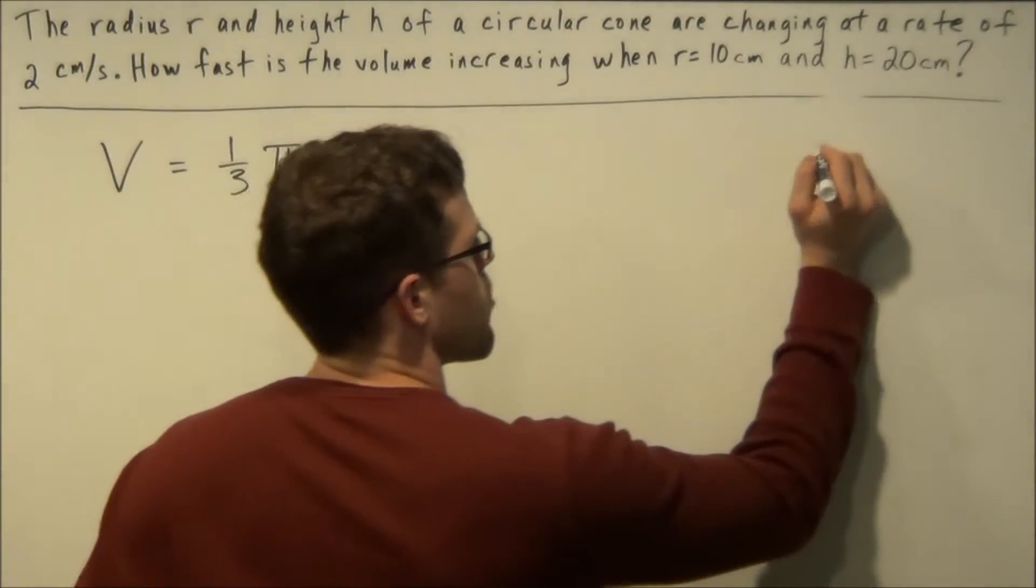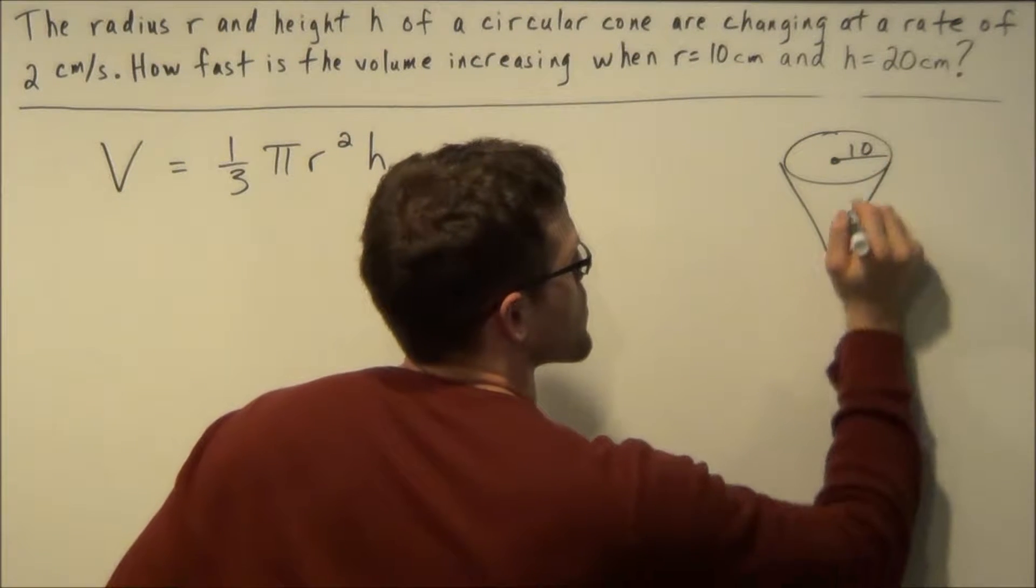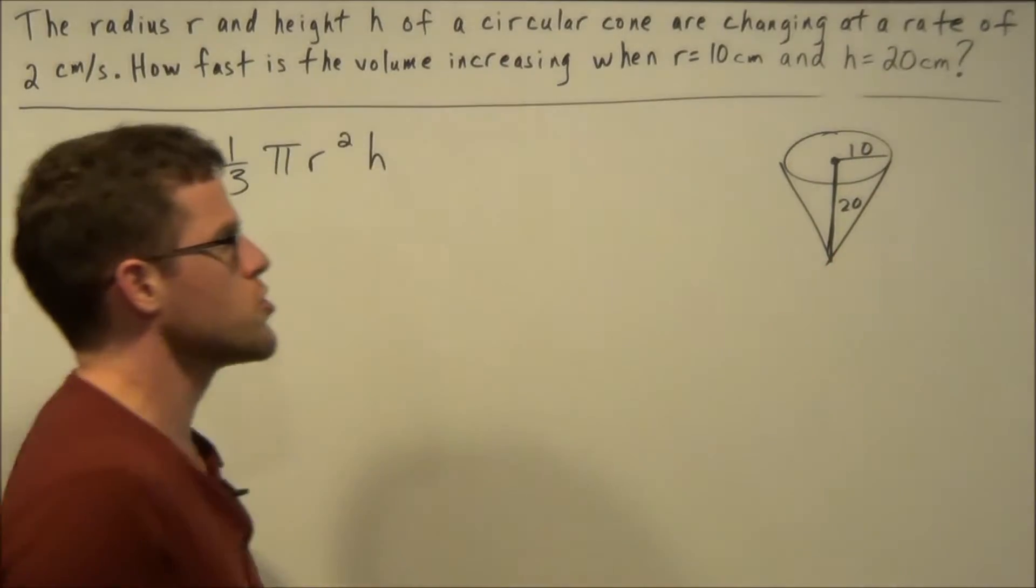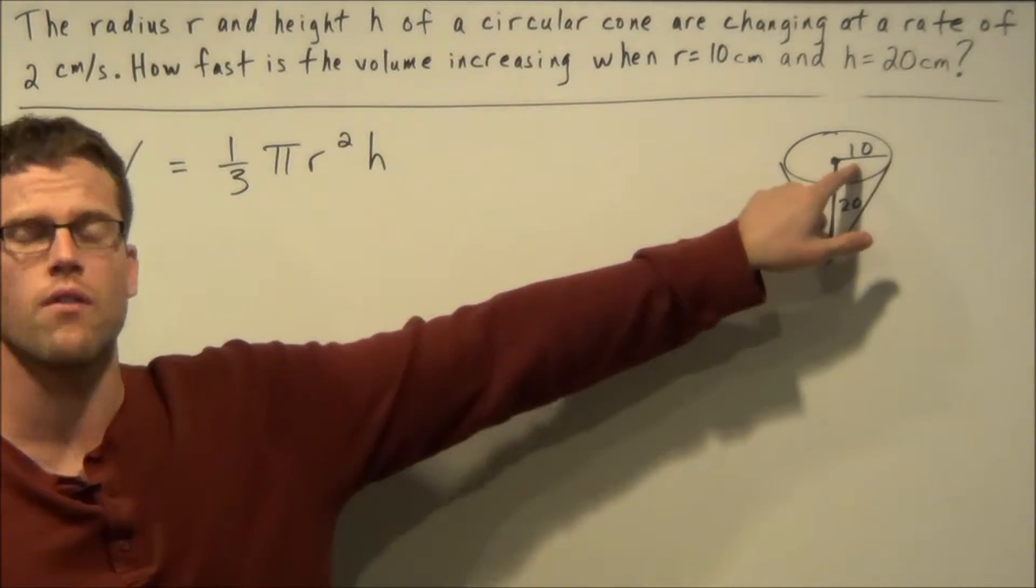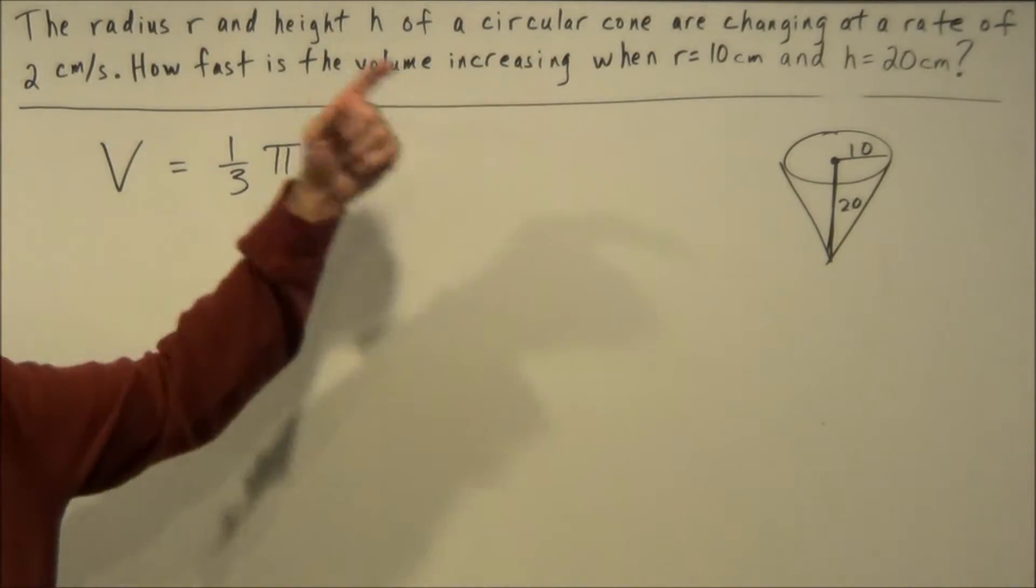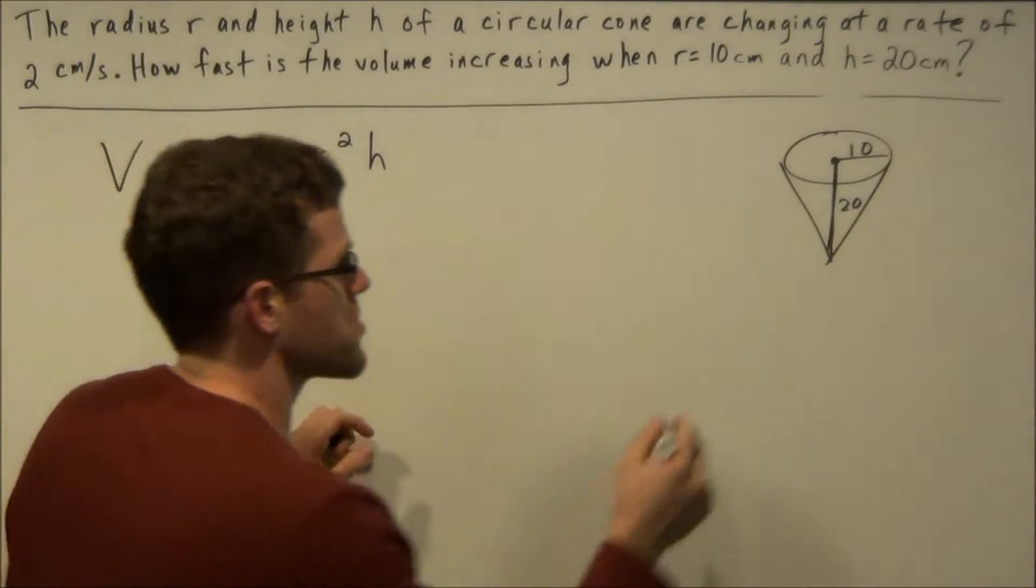At this exact moment in time the radius is 10 and the height of the cone is 20. For some cone problems you make use of the ratio of the radius to the height. But in this example we have to be careful because the radius and the height are both increasing at a rate of 2 centimeters per second.